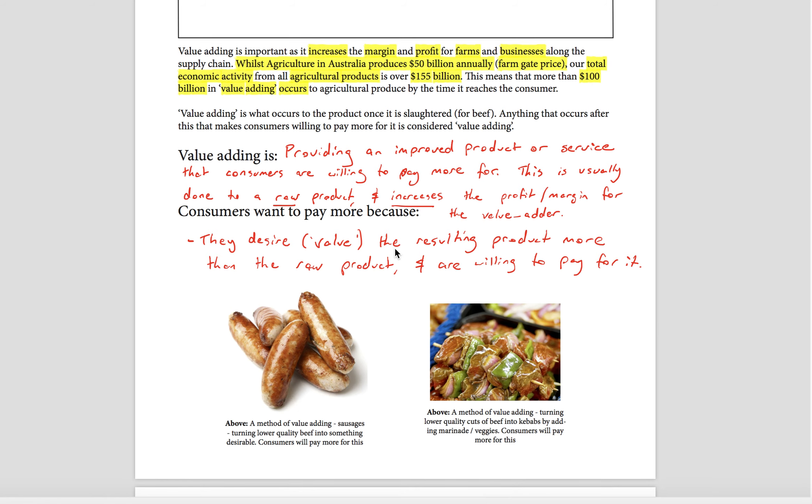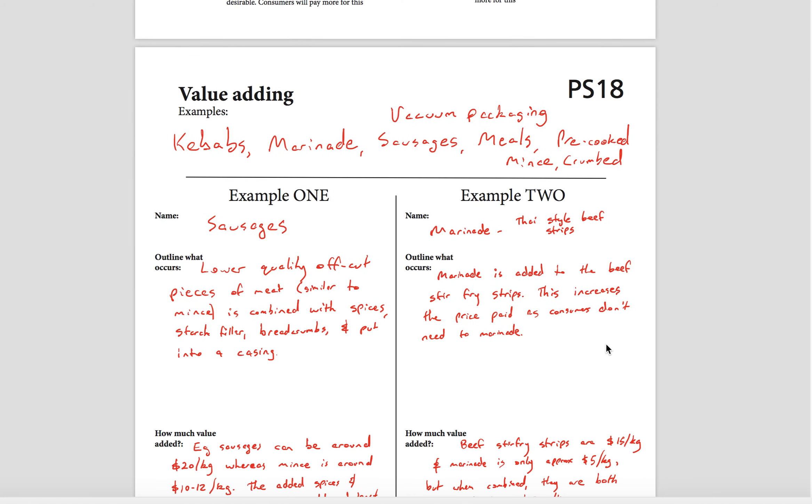People are willing to pay more for different things that occur along the process. The reason why people pay more or want to pay more is because they desire or they value the resulting product more than the raw product. Examples here are sausages or kebabs. People see those products and they're willing to pay more for them because they're tastier, they're more convenient. Rather than just buying a packet of mince or a whole cut of beef, they buy these things ready to go, and it's much quicker and more convenient.